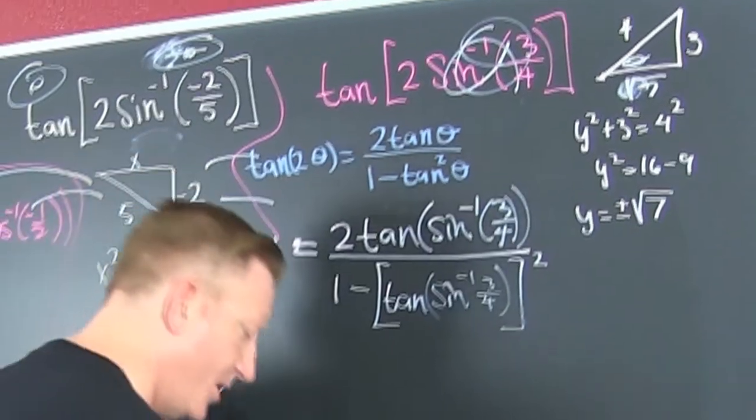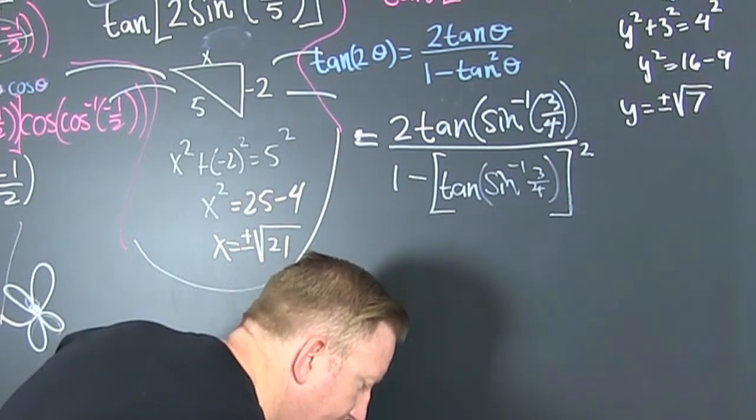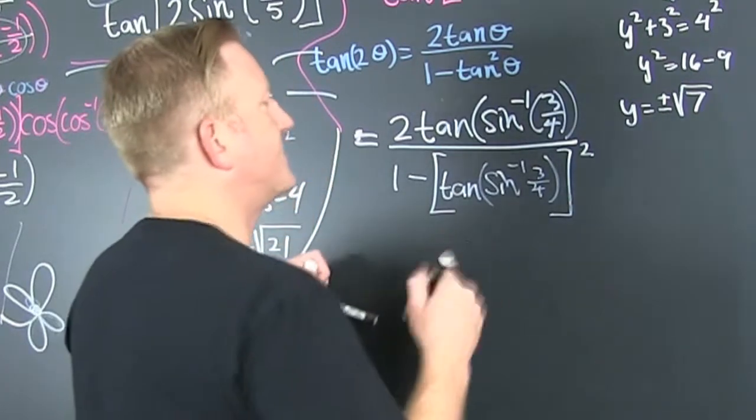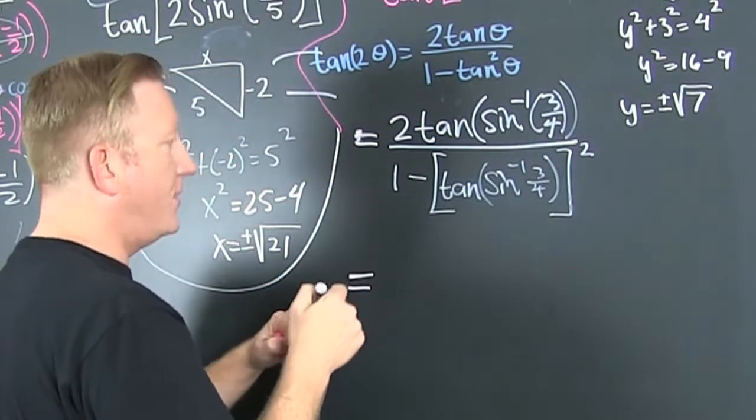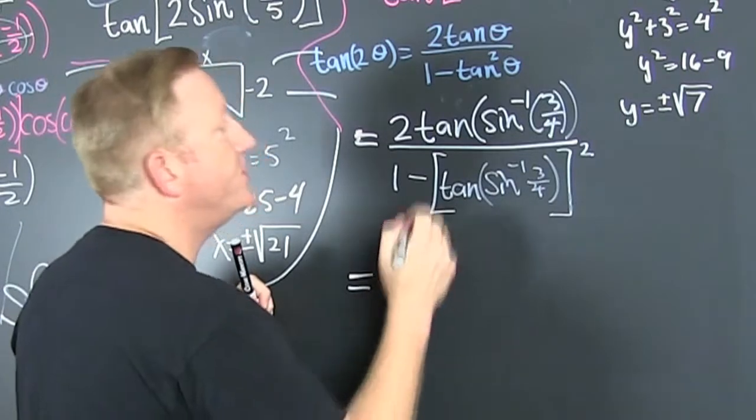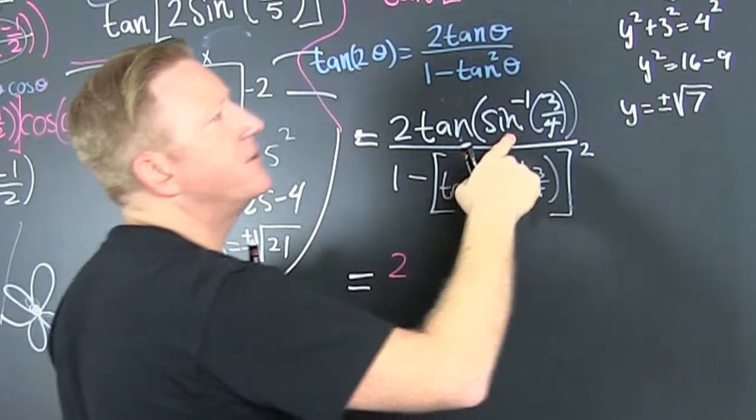All right. So we know we don't want to get this brand of marker. All right. So that's going to be two times the tangent of that triangle. That's what that says. The tangent of that triangle.